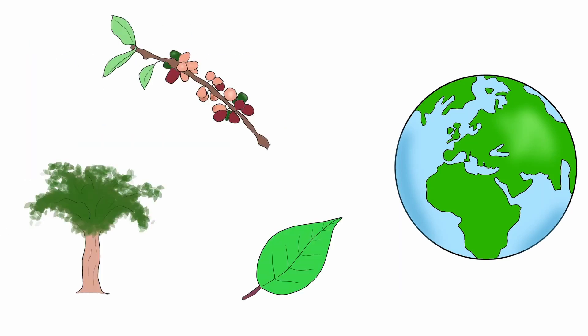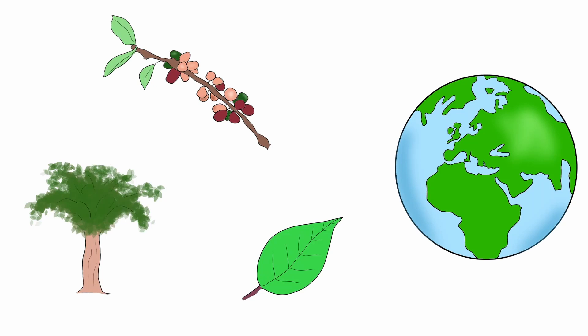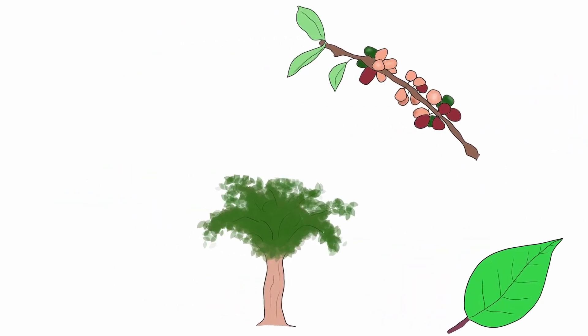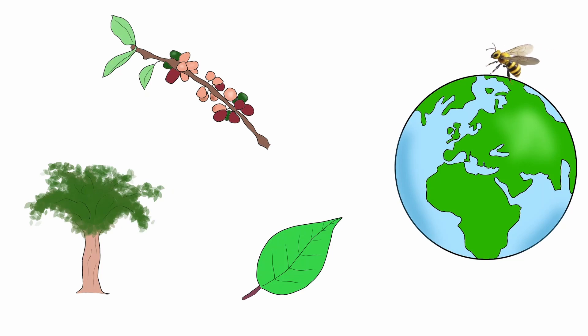Caffeine is produced by many plant species, mostly ones native to Africa, East Asia and South America. It's found in their leaves, seeds and fruits. These plants evolved to produce caffeine for a range of survival mechanisms, like deterring herbivores from eating them, or attracting bees to increase their pollination.